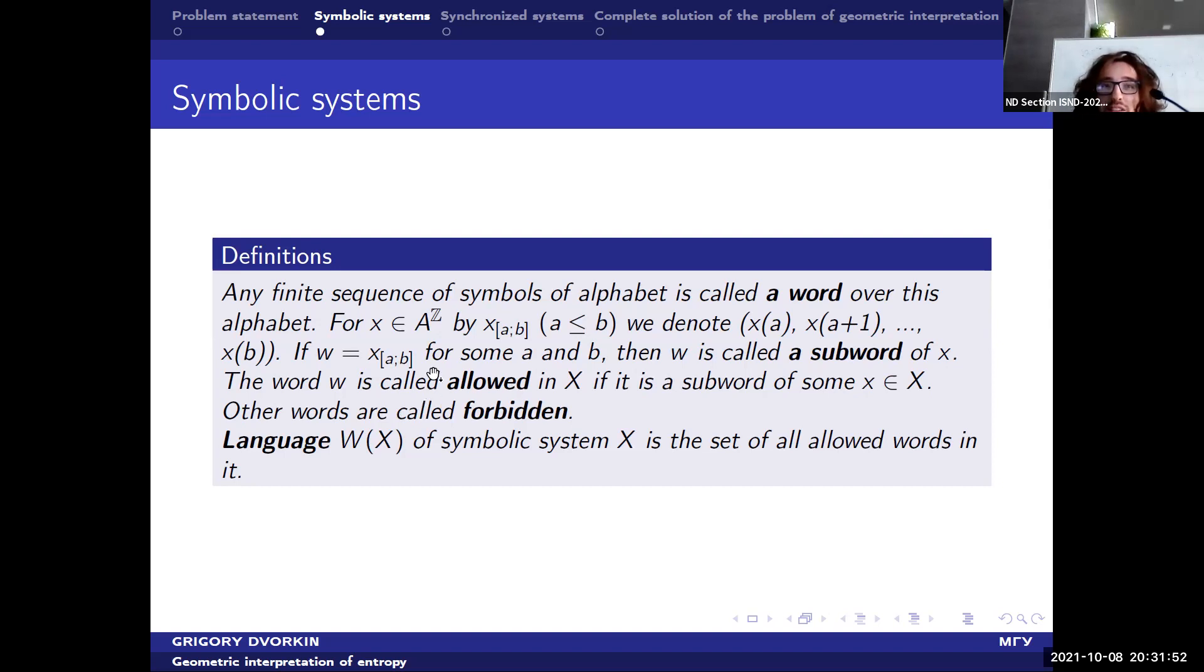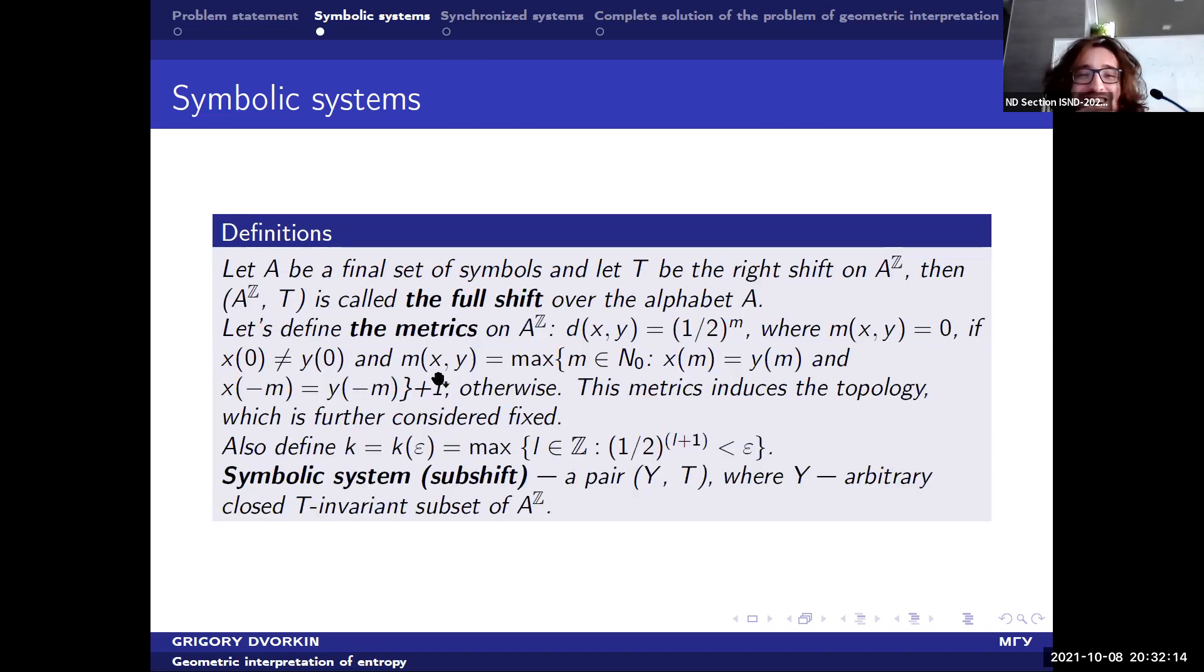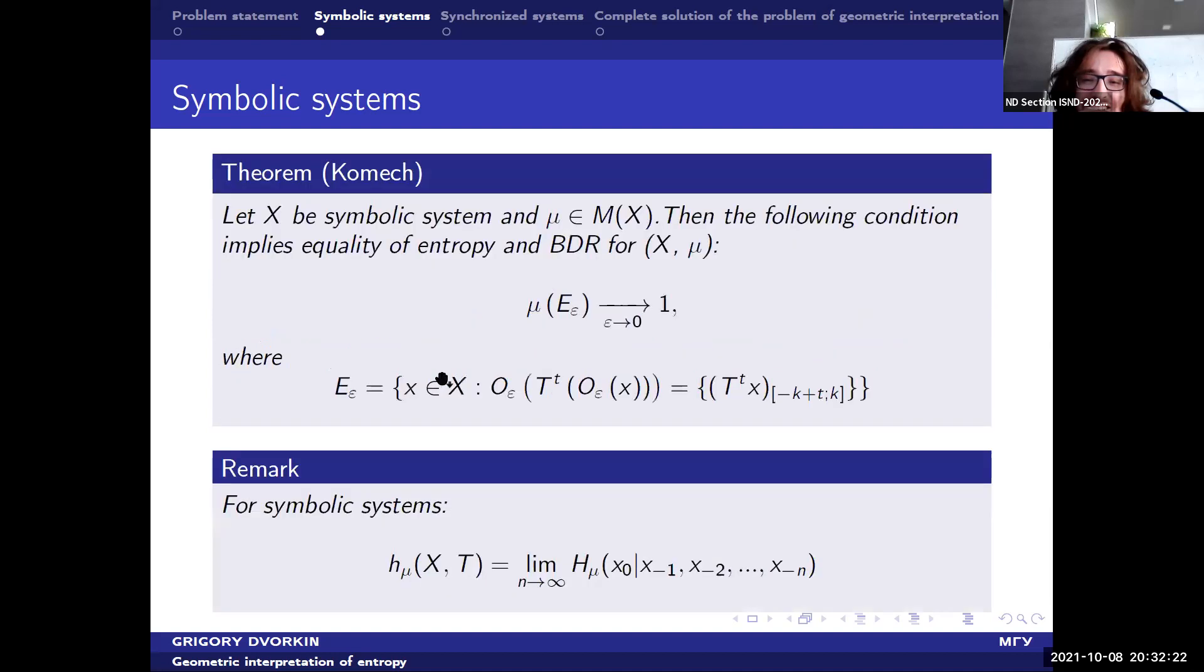We can't consider this limit almost everywhere. But we can consider it in mean and we have a very big amount of results by considering this limit in mean. And I am going to present these results in mean in the space of L1 of integrable functions. And we have such this theory. I think that's really difficult with some sufficient condition to the equality of BDR and Kolmogorov-Sinai entropy.